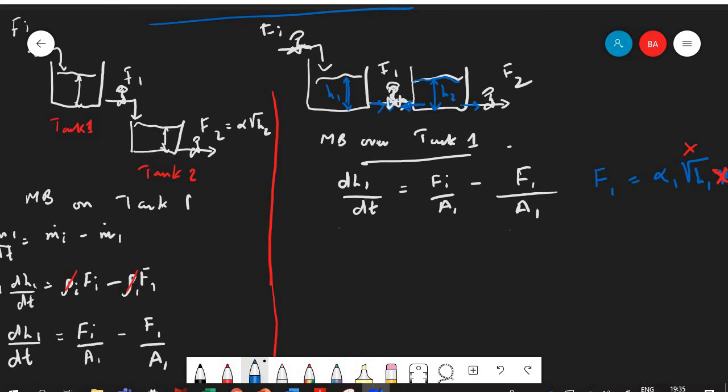So actually what we have here, the valve sitting in the middle is a function of both heights, which means that F1 here will not be equal to α1 h1, it will be α1 into the ρgh which we get the h value out which is h1 minus h2. h1 minus h2.